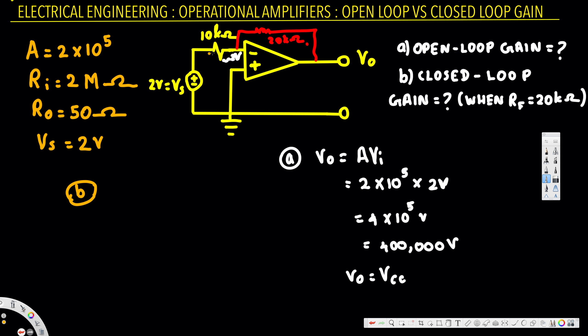This is a non-inverting configuration — wait, the input voltage is connected to the negative terminal. The negative terminal is inverting and the positive terminal is non-inverting, so this is actually an inverting amplifier.